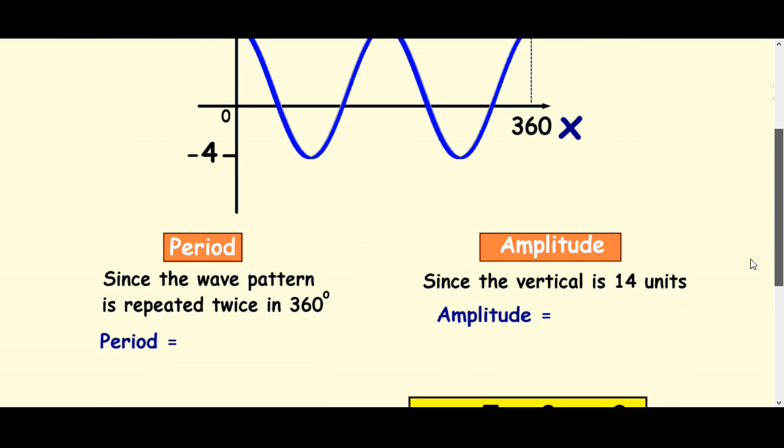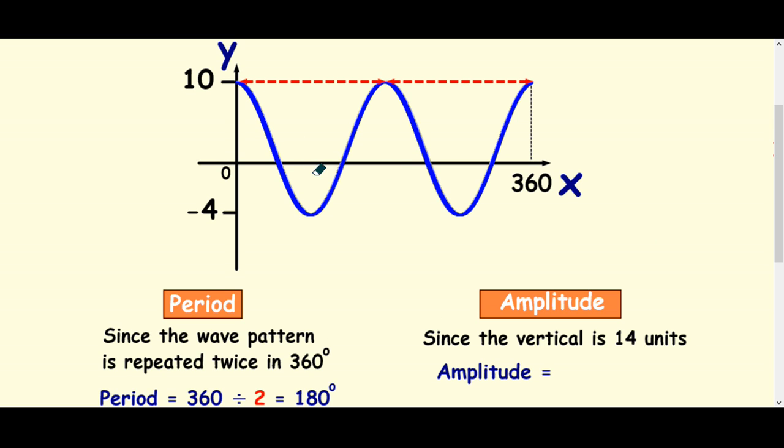So if I'm working at the period of it, because it's a repeating wave, then I take my 360 and divide it by 2. Remember, the period is one full cycle before the wave starts to repeat itself. So it's 180 degrees there.